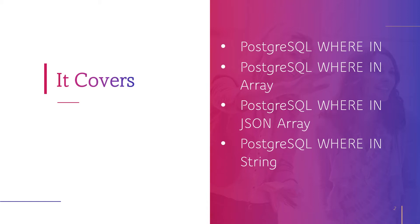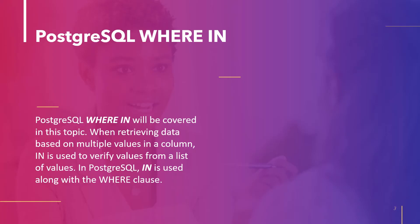Let's move to the first topic: PostgreSQL WHERE IN. The IN operator is used to check values from a list of values. It is used to retrieve data according to multiple values in a column. The IN operator is used with the WHERE clause in PostgreSQL. Let's take an example to filter data according to multiple values.